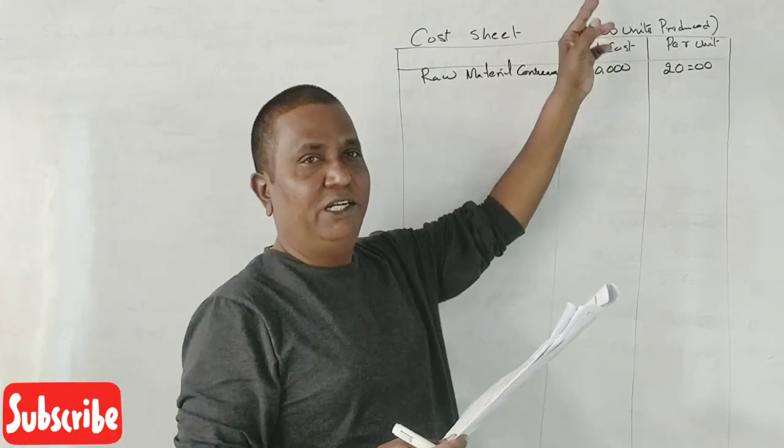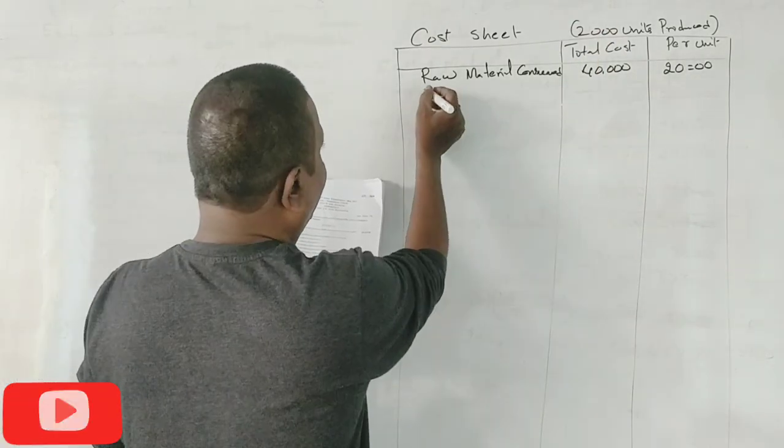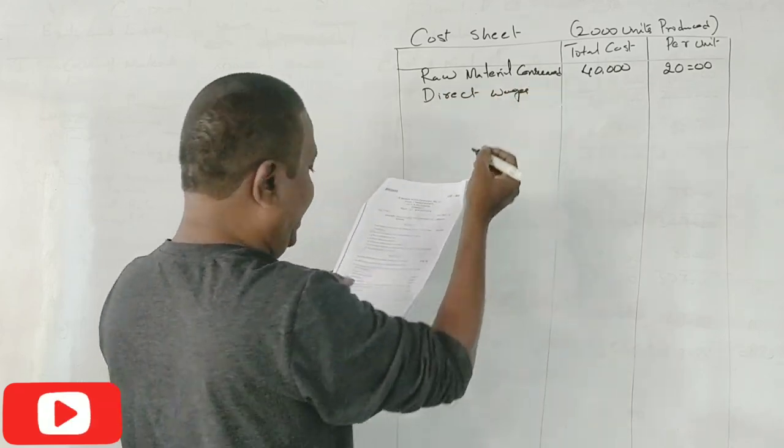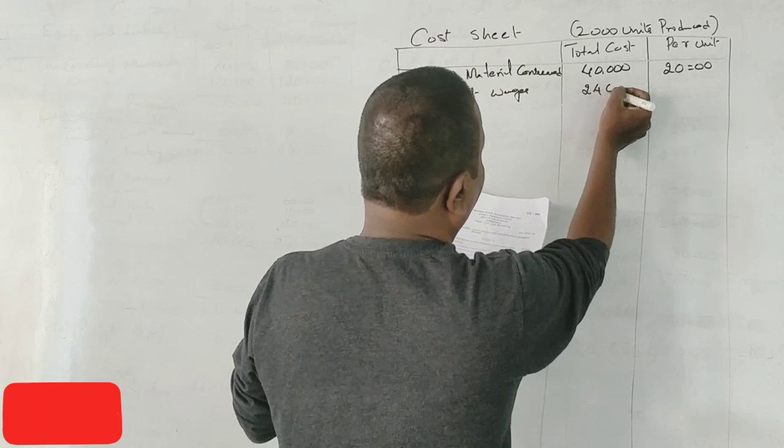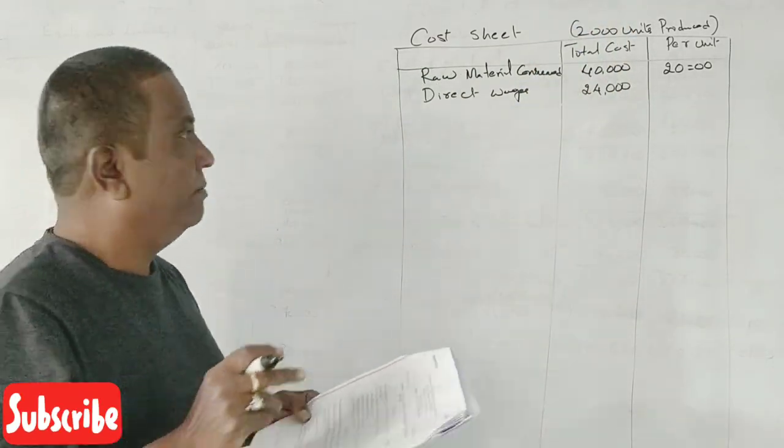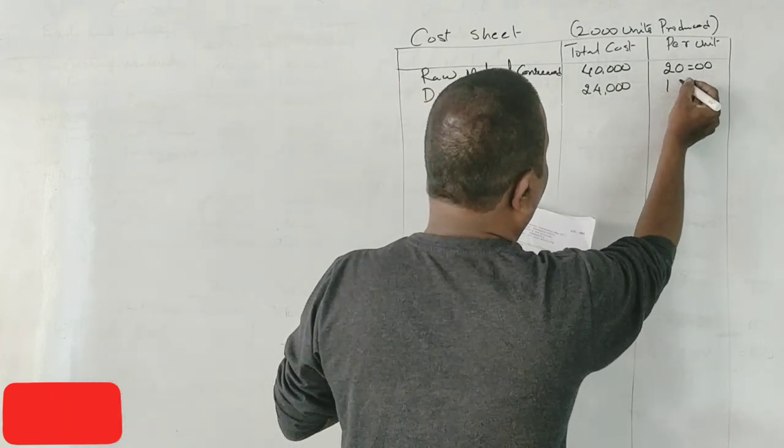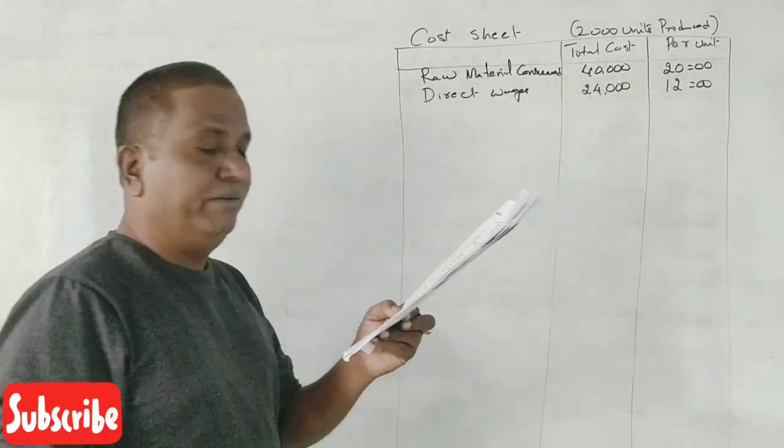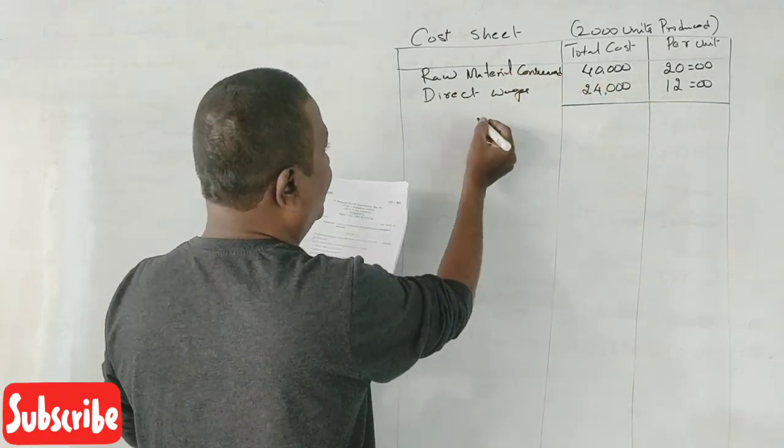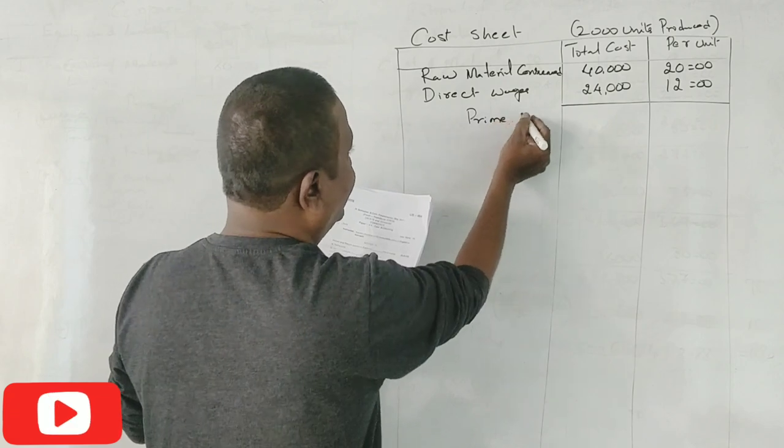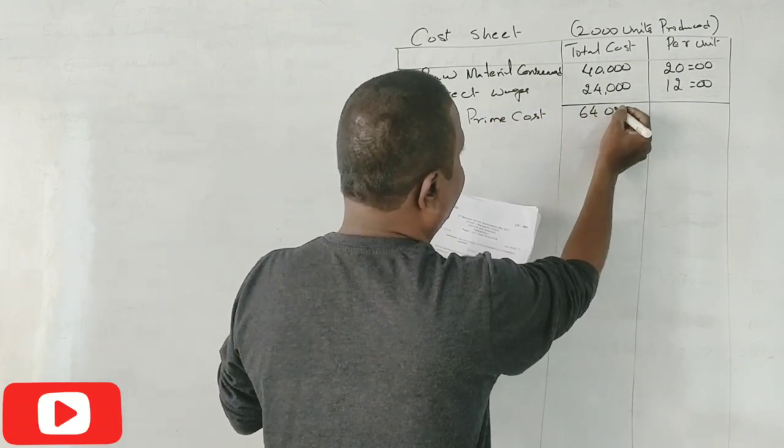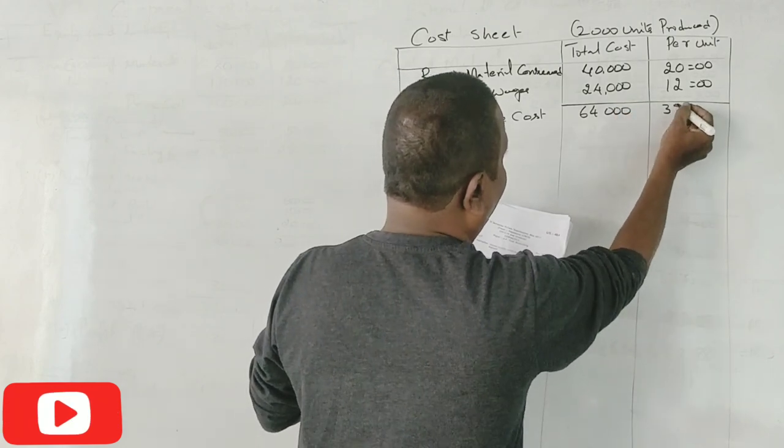Next is direct wages. Direct wages you paid 24,000 for how many units? For 2000 units to manufacture. Per unit it will be 12 rupees per unit. So this is what is the prime cost? 64,000 and 32 rupees is the per unit.